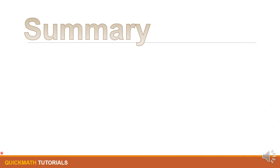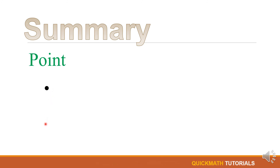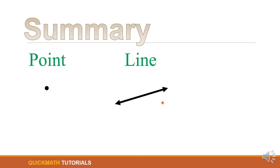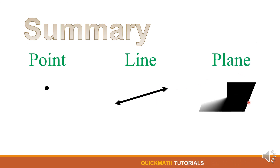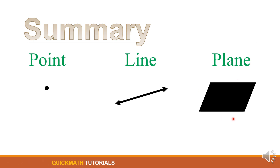To sum it up: a point has no size and no dimension — no length, no width, and no height. A line extends in two opposite directions without end, or infinitely in both directions, and it contains infinite points. And a plane is a flat surface that extends infinitely in all directions.